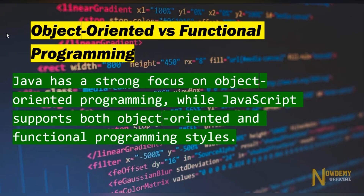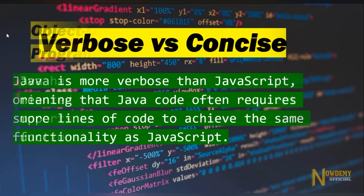Object-oriented versus functional programming: Java has a strong focus on object-oriented programming, while JavaScript supports both object-oriented and functional programming styles. Verbose versus concise: Java is more verbose than JavaScript, meaning that Java code often requires more lines of code to achieve the same functionality as JavaScript does.